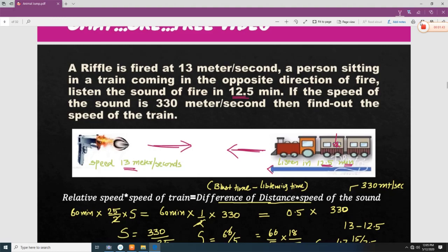If the speed of the sound is 330 meter per second, so what is given? The sound speed is given 330 meter per second. Then find out the speed of the train. We have to find out the speed of the train.